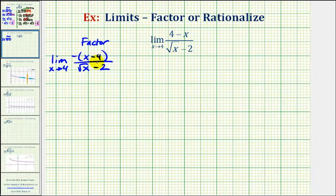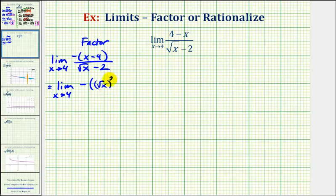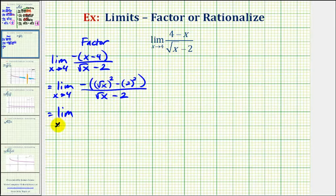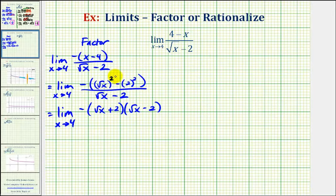Now even though it doesn't look like it, we can write x minus four as a difference of squares because the square root of x squared is equal to x and two squared is equal to four. So now we'll write this as the limit as x approaches four of negative, then the square root of x squared minus two squared. We still have this all over the square root of x minus two. Now we'll factor the numerator: we'll have one factor of the square root of x plus two and one factor of the square root of x minus two — these are the two factors from the difference of squares.